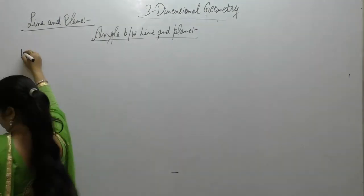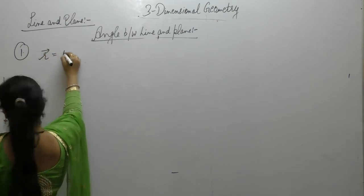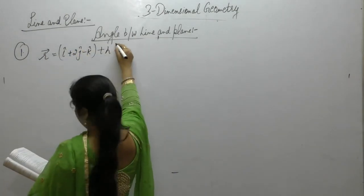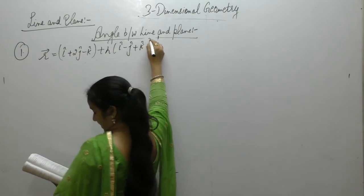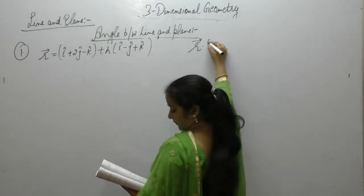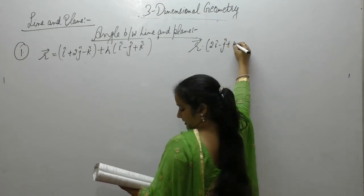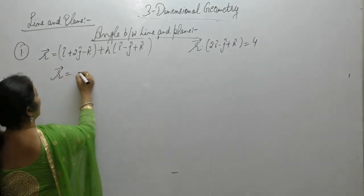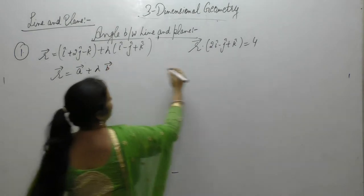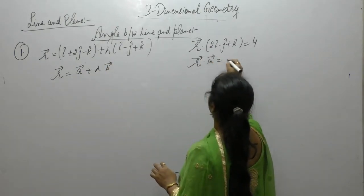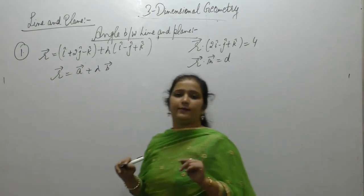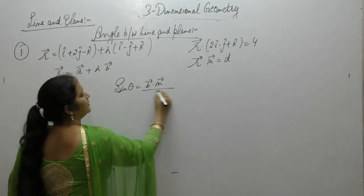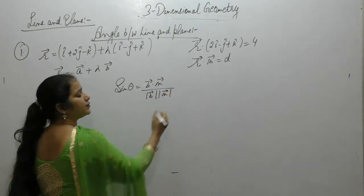Example 1: Find the angle between the line r = (i + 2j − k) + λ(i − j + k) and the plane r·(2i − j + k) = 4. The general equation of the line is r = a + λb, and the plane is r·n = d. The angle is sin θ = (b·n) / (|b| |n|).